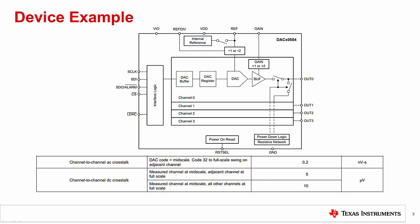The DC crosstalk specification is under two different conditions. The first value, 5 microvolts, is the difference measured on a channel that is at mid-scale output after only one of the three remaining channels transitions from zero-scale to full-scale output. The second value, 10 microvolts, is the difference measured on a channel after all three other channels transition from zero-scale to full-scale output.